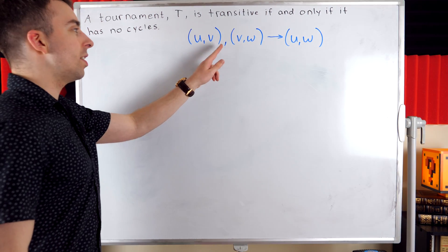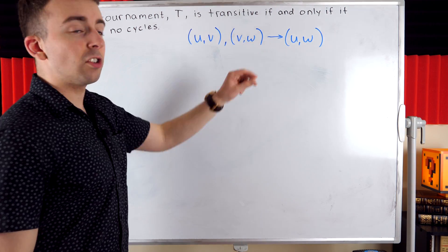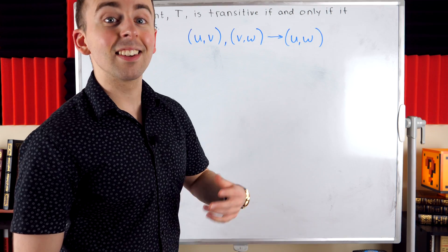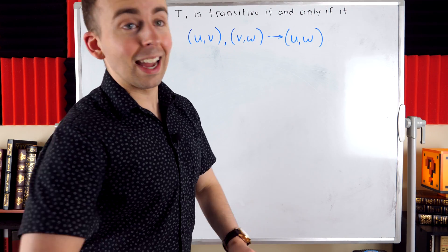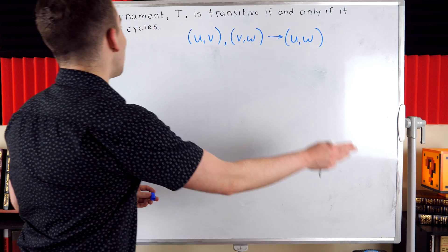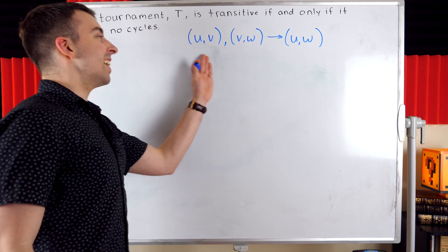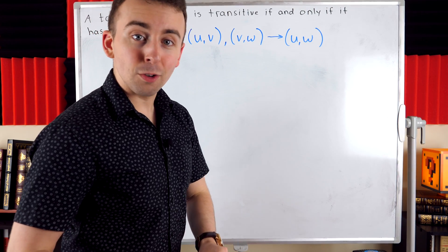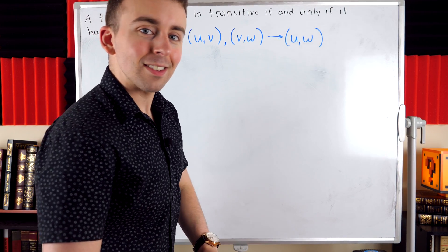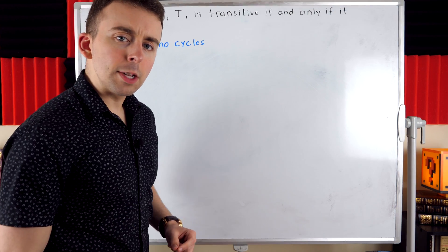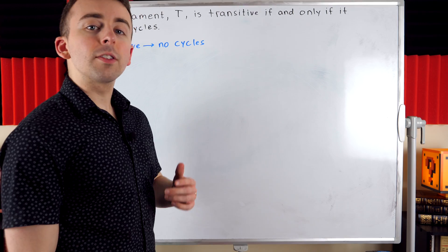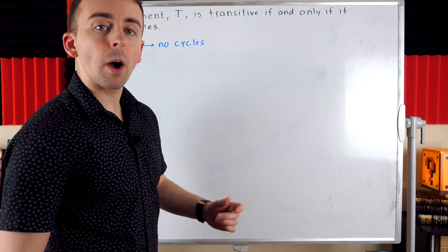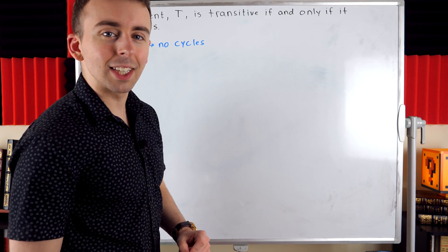So if U is adjacent to V and V is adjacent to W, then U is adjacent to W. And as we'll prove today, not having cycles is intimately linked to this transitive property for tournaments. The proof is pretty straightforward, so I definitely recommend giving it a try yourself before watching the rest of the lesson.